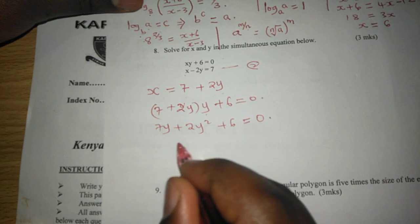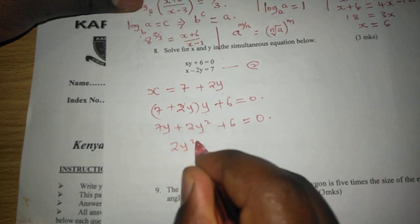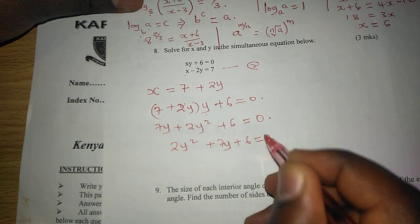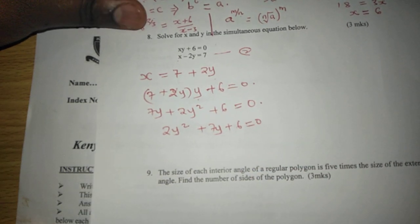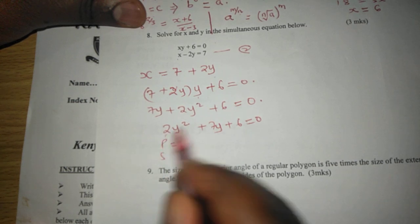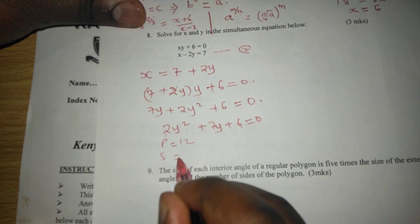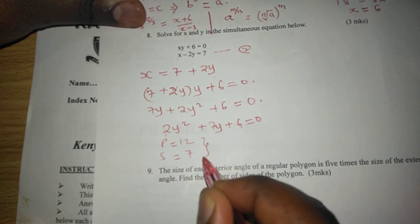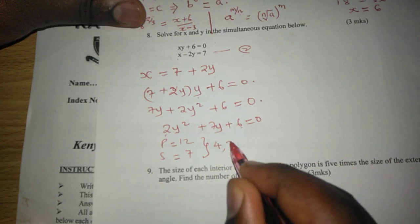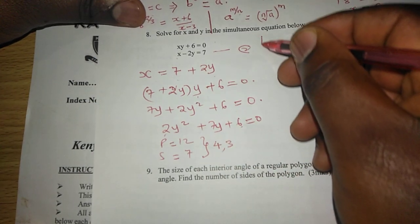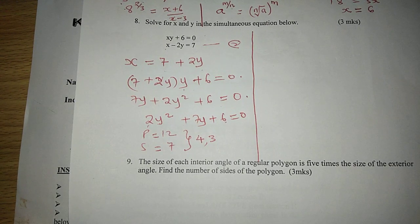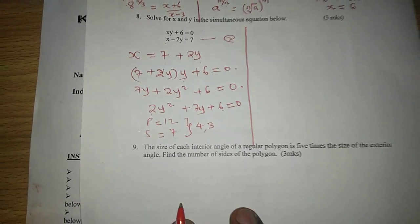Here we can arrange the equation to be 2y squared plus 7y plus 6 equals to 0. Now, it's quadratic in nature. We can get product and sum such that the product is 2 by 6, giving us 12, and the sum is 7. The two values here will be 4 and 3, such that when multiplied they give us 12, and when added they give us 7.